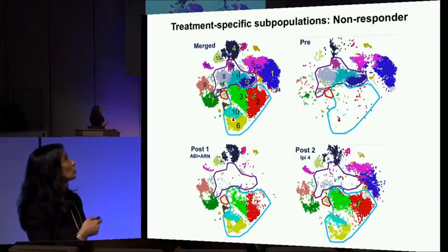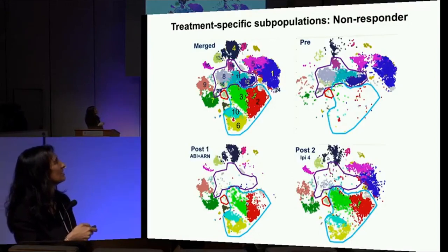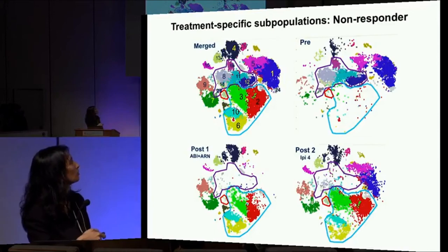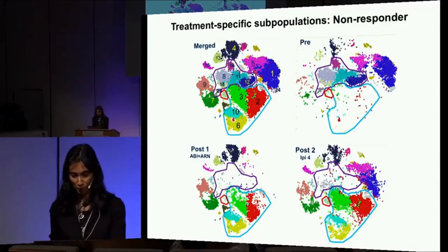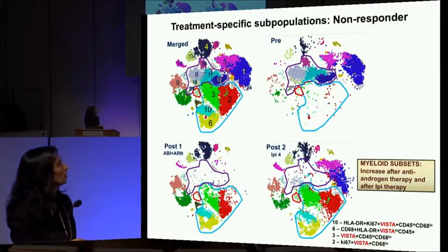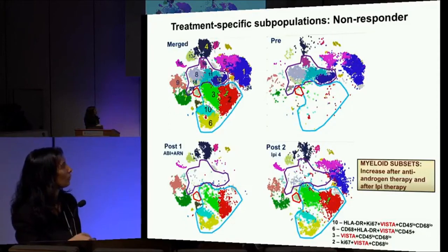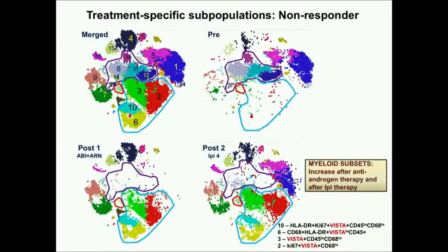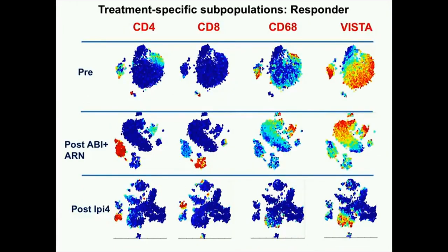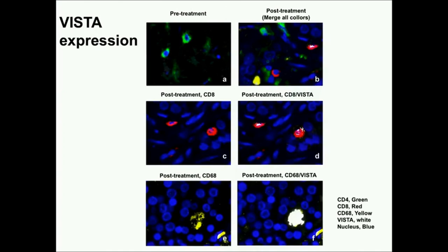In one patient, looking at longitudinal biopsies over time, the blue is the pretreatment samples, the red is post hormonal therapy, and the green is after immunotherapy — showing the immune response we're measuring in the biopsy sample. In the pretreatment, these subsets did not exist. Then they started to exist after hormonal therapy, and they persist after anti-CTLA-4 immunotherapy. This patient is a non-responder, and those subsets turned out to be VISTA-positive subsets. In a responder patient, the VISTA subset actually disappears over time, and that patient had a good response.